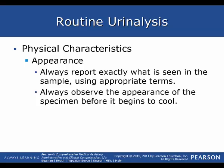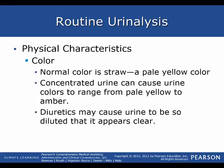Always observe the appearance of the specimen before it begins to cool. The normal color of urine is straw — a pale yellow color — and you should use that word to describe it. Concentrated urine can cause colors to range from pale yellow all the way to amber, which is a darker reddish color. Diuretics may cause urine to be so dilute that it appears clear.